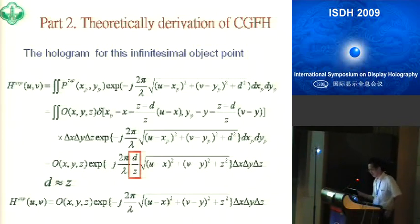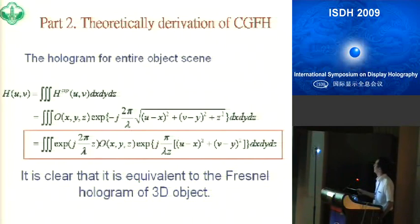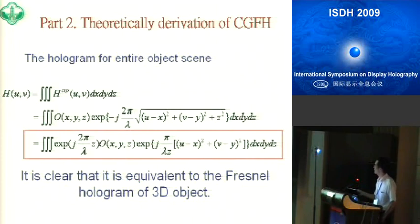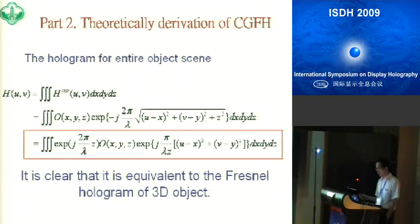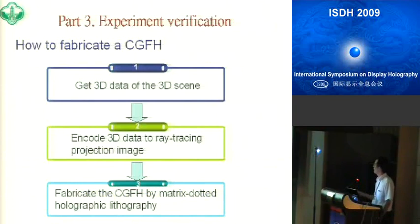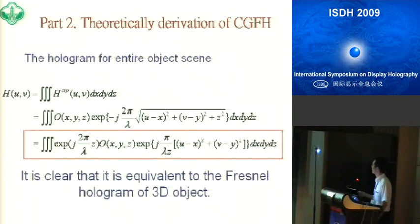The hologram for the whole object scene is written as follows — this is very familiar to us. These are the Fresnel equations. It is therefore clear that the computer-generated Fresnel hologram is equivalent to the traditional Fresnel hologram of a 3D object. That is why the CGFH can record the depth of the 3D scene. We have obtained this theoretical and analytical result proving this equivalence.